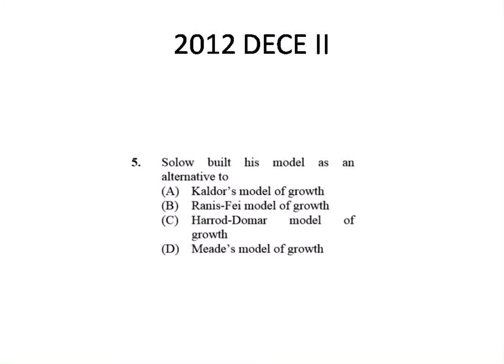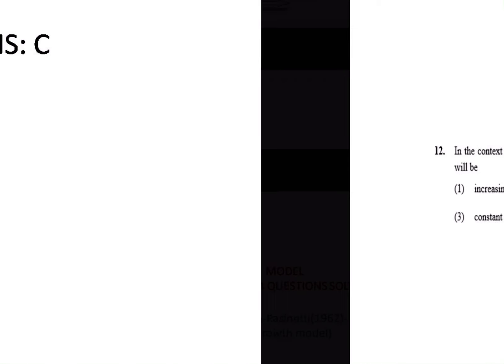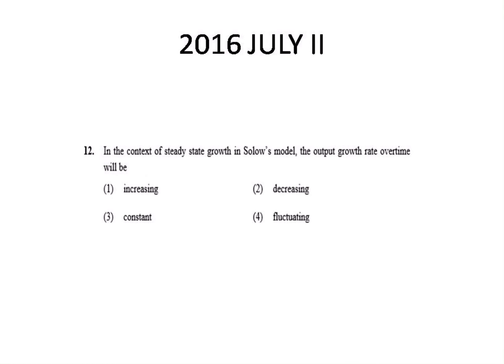Now let's discuss previous year questions. The question from December 2012, Paper 2: Solow built his model as an alternative for long-run growth without the assumption of fixed proportions in the production function. Two statements are correct, and accordingly that is the correct option.